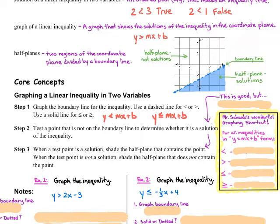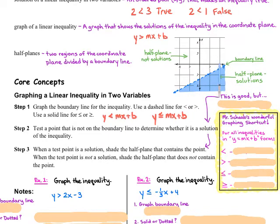How do we graph a linear inequality in two variables? If you know how to graph a line, you're going to be just fine. There are just a couple of extra things to worry about. Step one: graph the boundary line for the inequality. You take whatever inequality you have, treat it like an equation, and graph the line. You use a dashed or dotted line for less than or greater than signs.